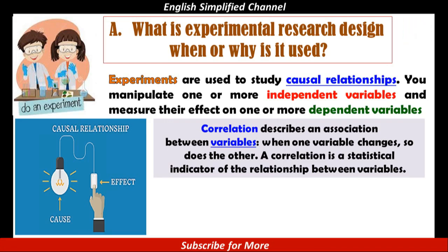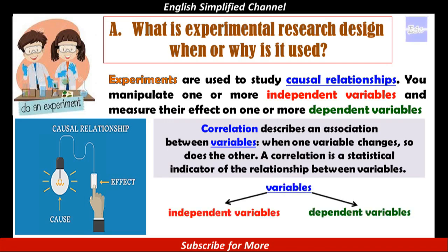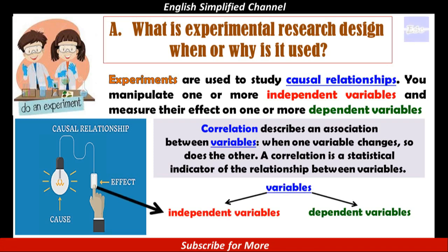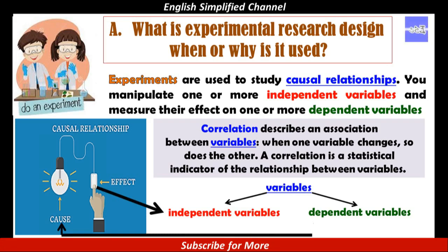Variables are normally divided into two types in research: independent and dependent variables. As you can see by the picture, the independent variable is the cause — its value is independent of other variables in your study. While the dependent variable is the result of the effect — its value depends on changes in the independent variable.